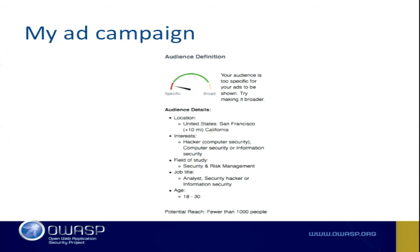I ran an ad campaign earlier today and targeted people I'd think are at this conference — people in San Francisco within a ten-mile area who have shown interest in security websites, consider themselves hackers, have studied risk management or security, and are generally under 30. Our industry is fairly young, so being able to target a very specific group of users is powerful.